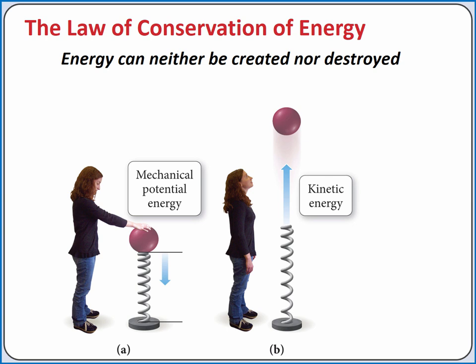For example, if we have a bowling ball placed on a spring and we push it down to compress the spring, we're transferring energy to the spring in the form of elastic potential energy, which is a form of mechanical potential energy. If we let go of the bowling ball and spring, the elastic potential energy will be converted into kinetic energy and transferred to the bowling ball.